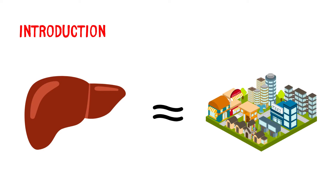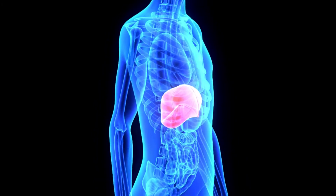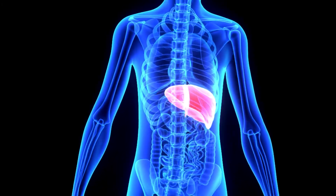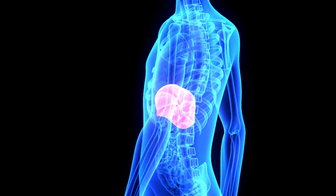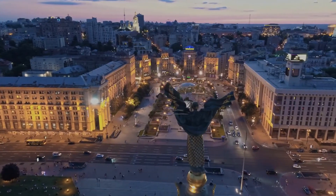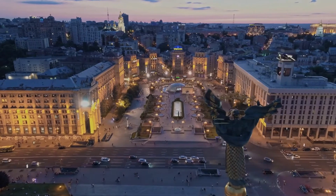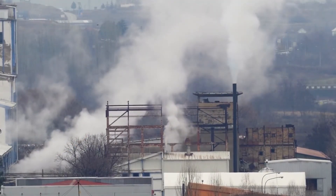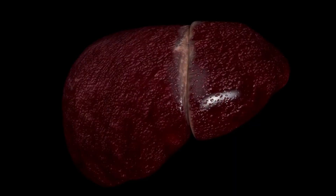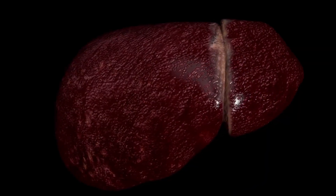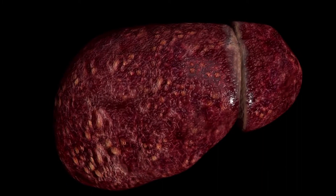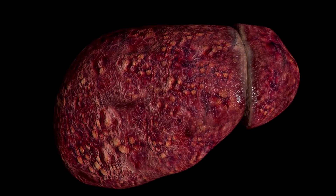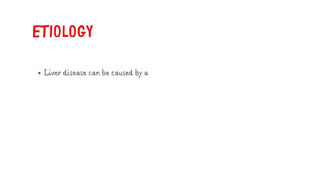Imagine a vibrant city with a well-functioning infrastructure, represented by a healthy liver. The liver performs essential functions in the body such as detoxification, metabolism, and production of important proteins — just like a city's administration and infrastructure. Now consider the effects of cirrhosis: just like extensive damage and decay of a city, the liver can be affected by chronic alcohol use, hepatitis infections, or certain diseases, progressively damaging liver cells and leading to inflammation and scarring.